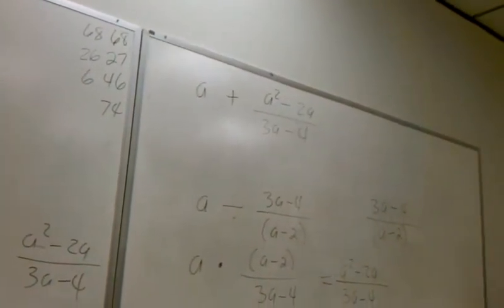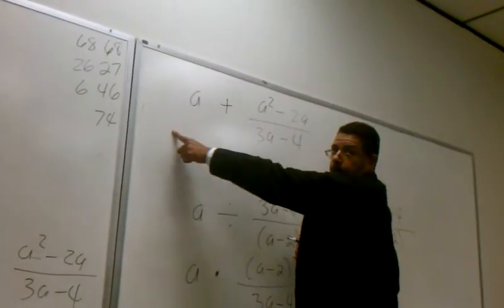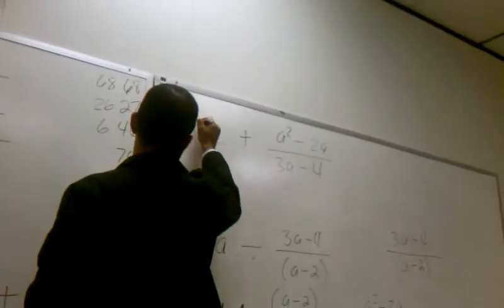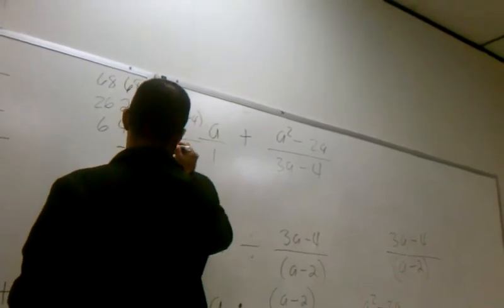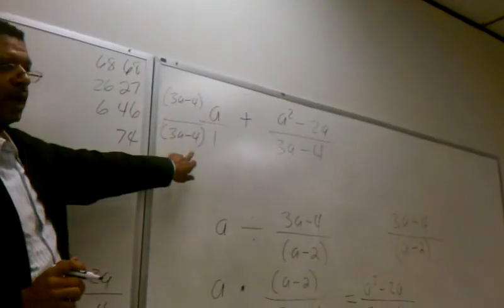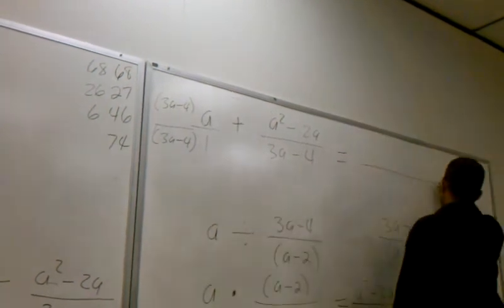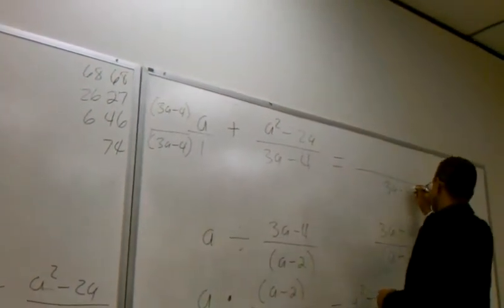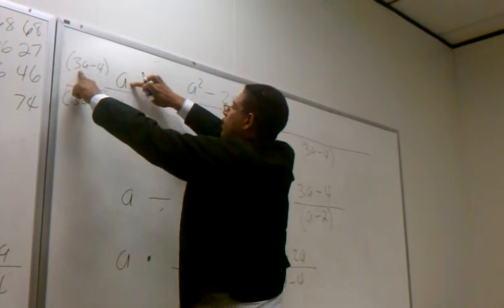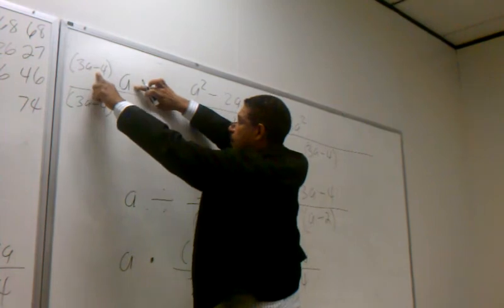What's my common denominator? 3a minus 4. We're going to take this a and multiply it by 3a minus 4 over 3a minus 4 to get a common denominator. Now I have a common denominator — write that once. 3a minus 4. Now let's focus on the numerator, using the distributive property. 3a times a is 3a squared. Minus 4 times a is negative 4a. Plus a squared minus 2a. Do we have any like terms? Yes.